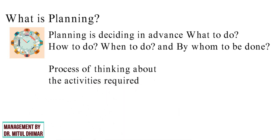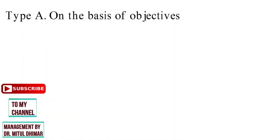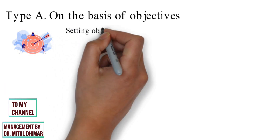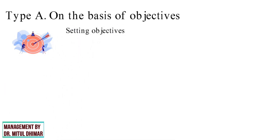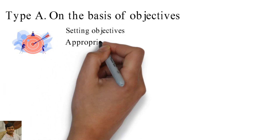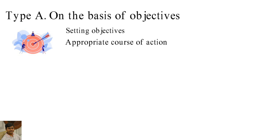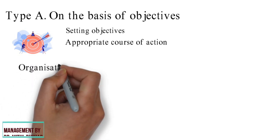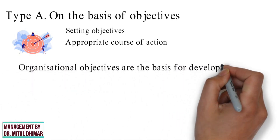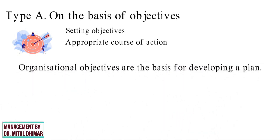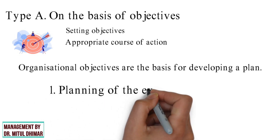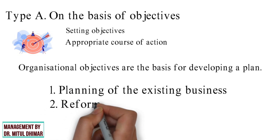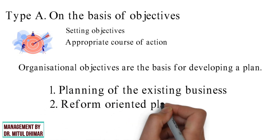So now let us study types of planning in detail. Type A: on the basis of objectives. Planning involves setting objectives and deciding in advance the appropriate course of action to achieve these objectives. Organizational objectives are the basis for developing a plan. There are two types of planning based on objectives: planning of the existing business and reform-oriented planning.